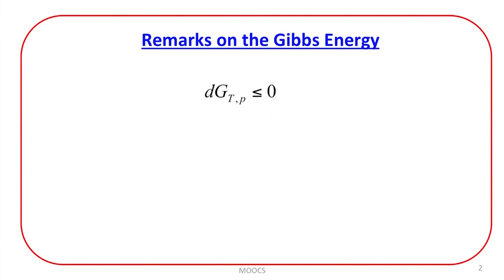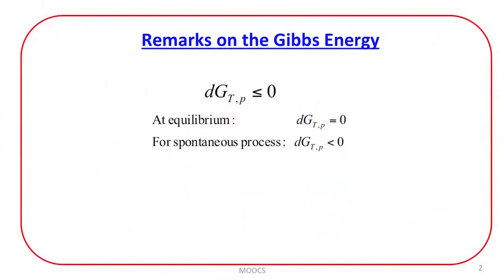Let us now discuss some remarks on the Gibbs energy. The change in Gibbs free energy at constant temperature and pressure should be less than or equal to 0 — that is the criteria of spontaneity. As we discussed in the previous lecture, if the process is reversible or if the process is at equilibrium, then there is no change in Gibbs free energy; dG at constant temperature and pressure is equal to 0. However, for spontaneity the change in Gibbs free energy should be negative. This is the most widely used criteria of spontaneity, because it is easy to maintain temperature and pressure constant rather than maintaining temperature and volume constant.